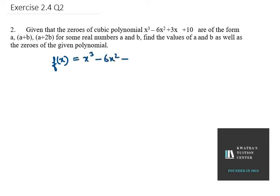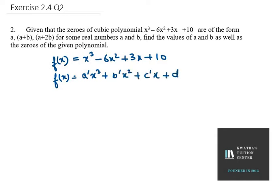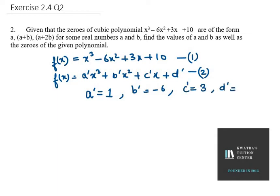We write f(x) as x³ minus 6x² plus 3x plus 10. A cubic polynomial is of the general form a'x³ plus b'x² plus c'x plus d'. Here we use dashed variables a', b', c', d' because the zeros are given as a, a+b, and a+2b. Comparing the two equations, a' equals 1, b' equals minus 6, c' equals 3, and d' equals 10.